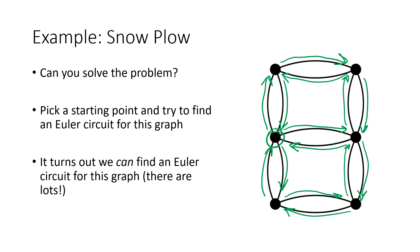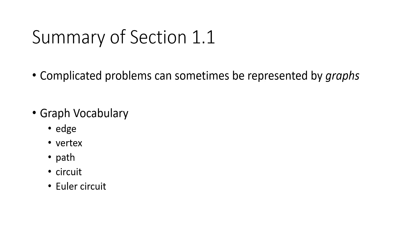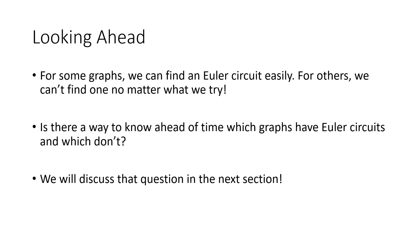To summarize: complicated problems can be represented by graphs, and we learned key vocabulary — edges, vertices, path, circuit, and Euler circuit. Going forward, we'll notice that some graphs have Euler circuits that are easy to find, like the snowplow example, while other graphs seem to have no Euler circuit at all no matter how hard you try. Our goal will be to figure out a way to determine ahead of time which graphs have Euler circuits and which don't, so we don't waste time trying. That's what we'll be talking about in the next section.